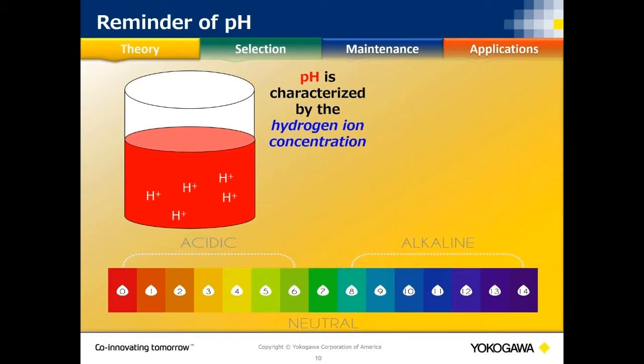In some applications, if your pH changes, your hydrogen ion concentration changes, and you'll see that in your ORP value as well. In those cases, we may have to compensate — this is what we call pH compensated ORP.